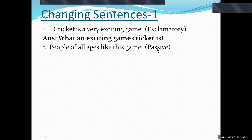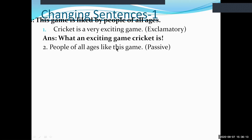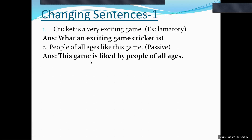To make this sentence passive, identify the object. The verb 'like' is used transitively; the subject is 'people of all ages' and the object is 'this game.' Take the object as the new subject. Since the sentence is in present indefinite tense, the auxiliary verb for passive is 'is' or 'are' — as 'this game' is singular, we use 'is.' The passive sentence is: 'This game is liked by people of all ages.'